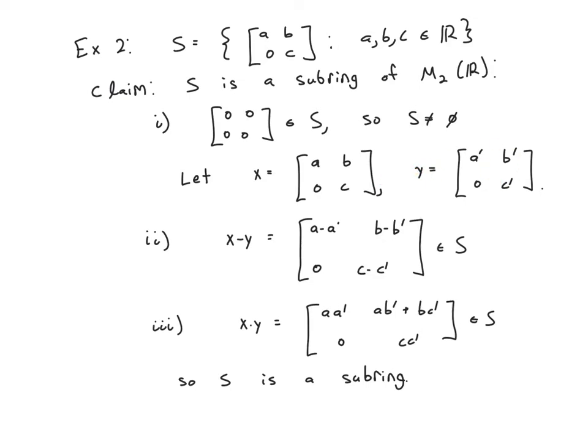Now in a complete proof, I would actually need to point out that A, B, C, A prime, B prime, and C prime are, in fact, real numbers because it's a video, I can just state that out loud, which is what I just did. So these are two matrices in S.